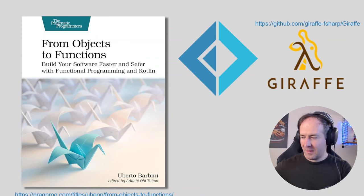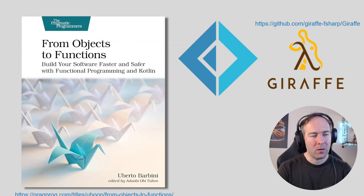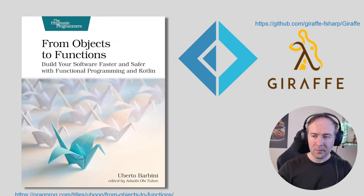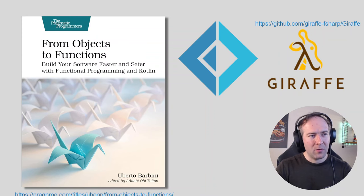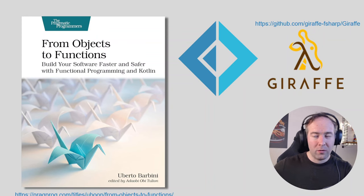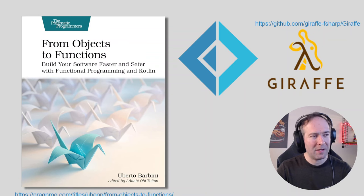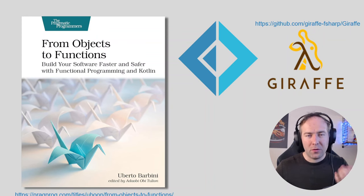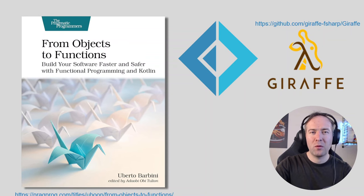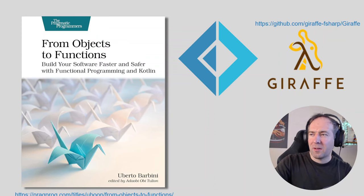This book is basically the table of contents of what we will be doing here, but in F#. The book itself uses Kotlin and Kotlin libraries. If you look at the tools we'll be using, the Giraffe framework is a one-to-one replacement for the HTTP4K library they use. We'll stay very close to the same ideas and concepts, but where Kotlin and F# diverge we'll do things the F# way.